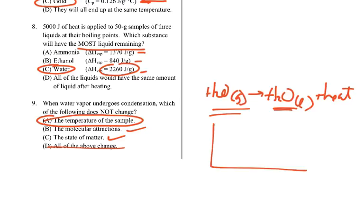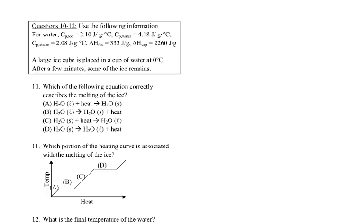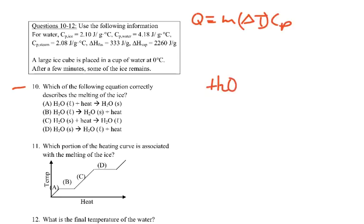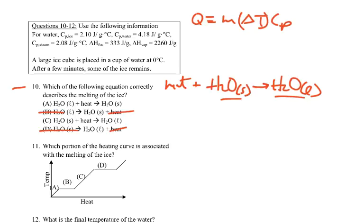Remember on the heating curve — while a phase change is happening, there is no temperature change. Number 10: a large ice cube is placed in a cup of water at zero degrees. Which equation correctly describes the melting of ice? Melting means a solid changing into a liquid. Heat goes on the more solid side, so heat + solid → liquid. We need heat on the left side with the solid turning into liquid. Answer C.